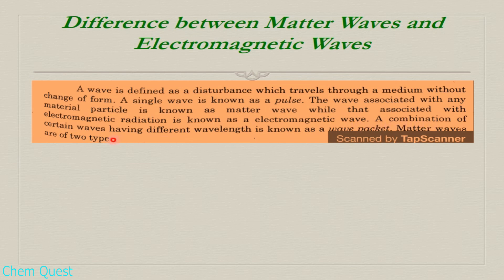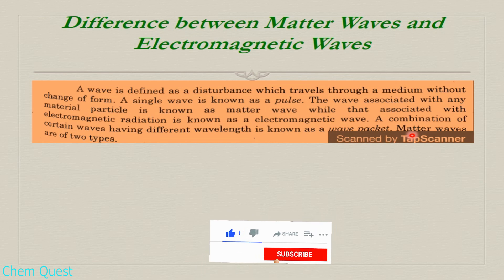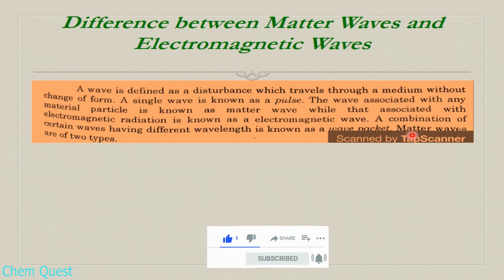A combination of certain waves having different wavelengths is known as a wave packet. Matter waves are of two types.